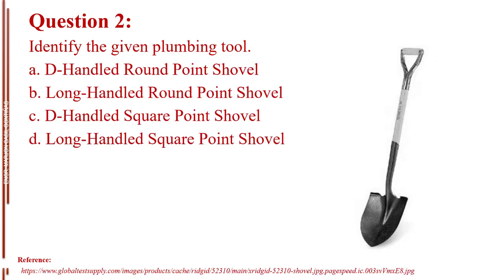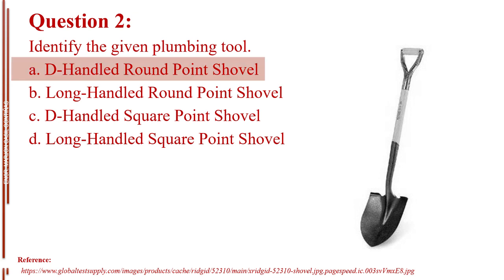Question number two. Identify the given plumbing tool. Letter A, D-handled round point shovel. Letter B, long-handled round point shovel. Letter C, D-handled square point shovel. Letter D, long-handled square point shovel. The answer is Letter A, D-handled round point shovel.